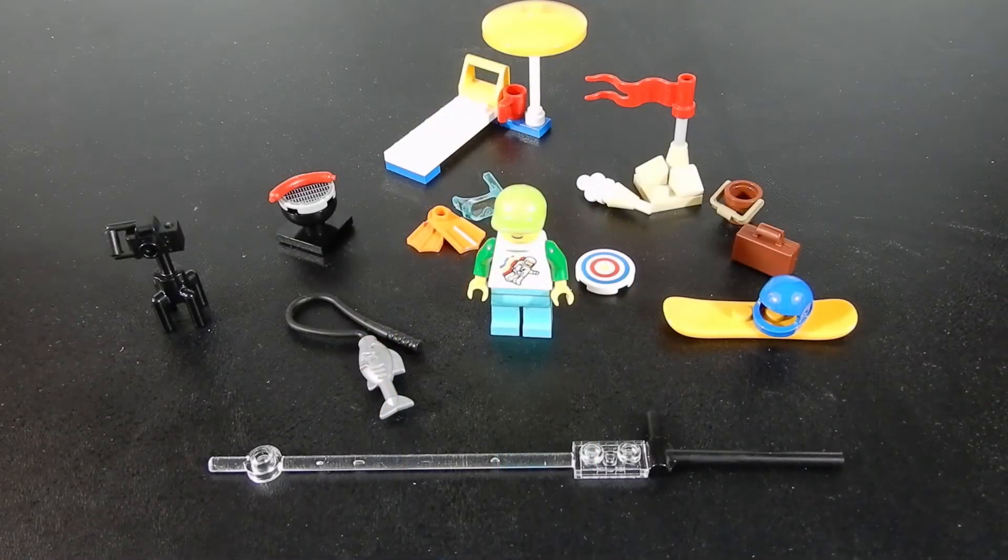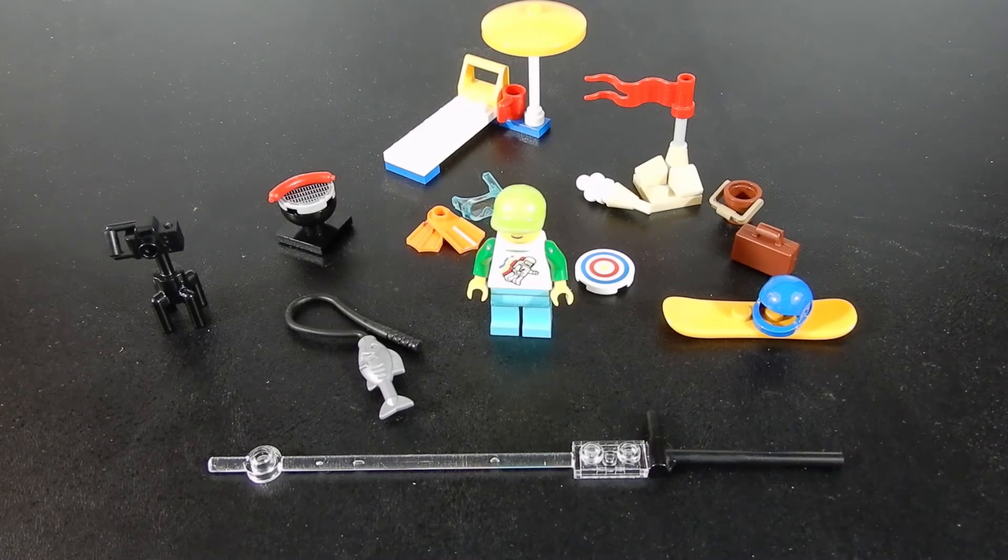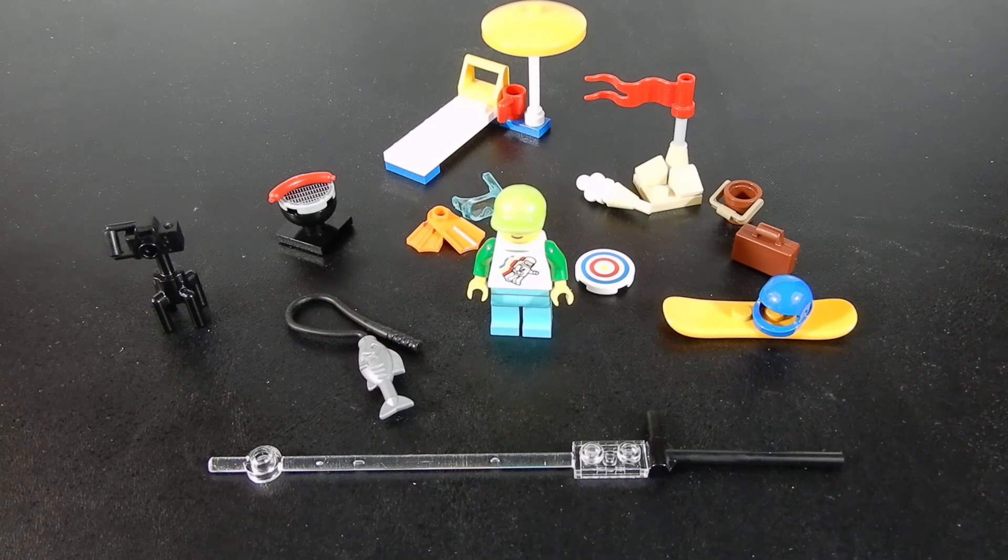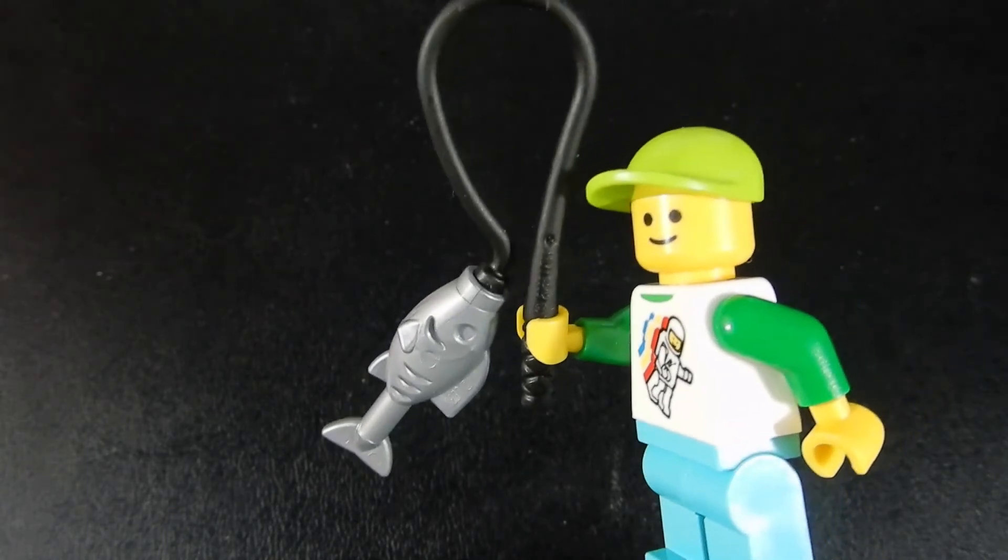In addition to the figure there are quite a few accessories that come with this set, including a couple of small builds. So let's go ahead and take a look at each of those components. Apparently our young traveler enjoys fishing and it looks like he's got a big one on the line.